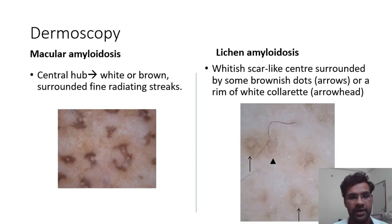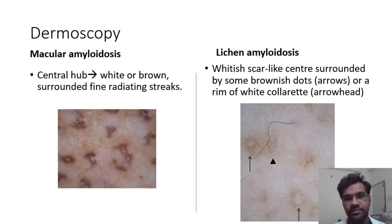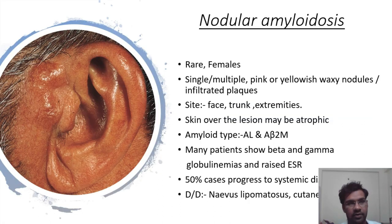Dermoscopic findings: macular amyloidosis presents as central hubs with white to brown radiating streaks. In lichen amyloidosis, lesions present as whitish scar-like centers surrounded by either brownish or whitish dots.